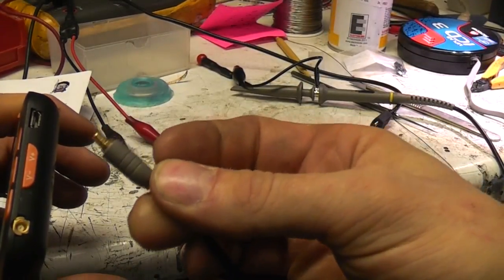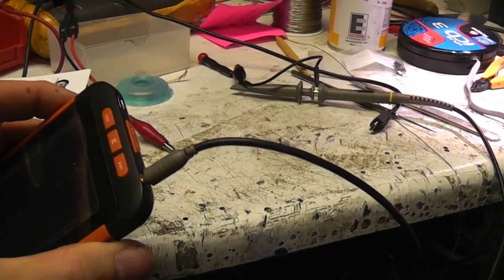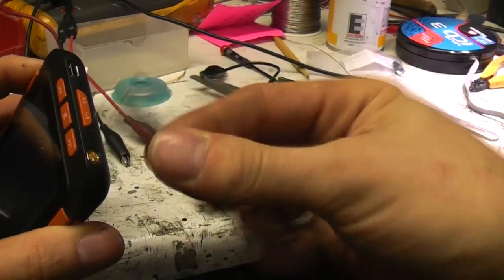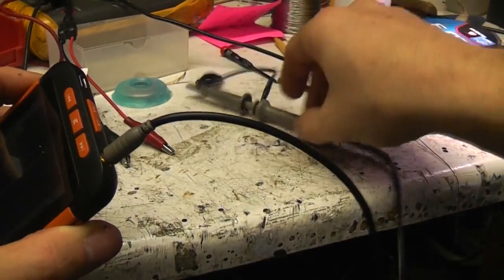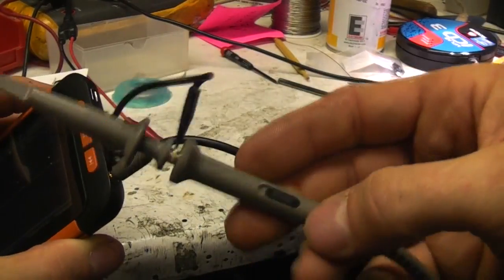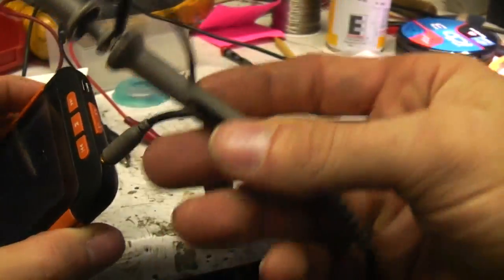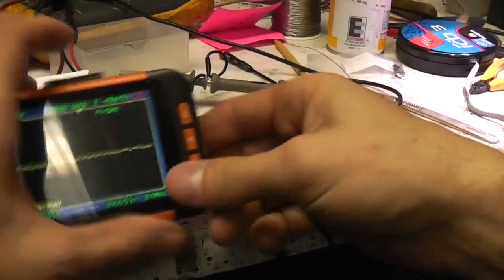As with a lot of these small scopes it uses one of these, I think these are an SMB or SMC connector. Now obviously on a scope you really want a BNC but something this small it doesn't really make sense to have a BNC connector. They don't supply a BNC adapter. It just comes with this fairly cheap probe. Switchable times one times ten. No compensation adjustment but other than that it's a fairly sort of bog standard cheap scope probe.